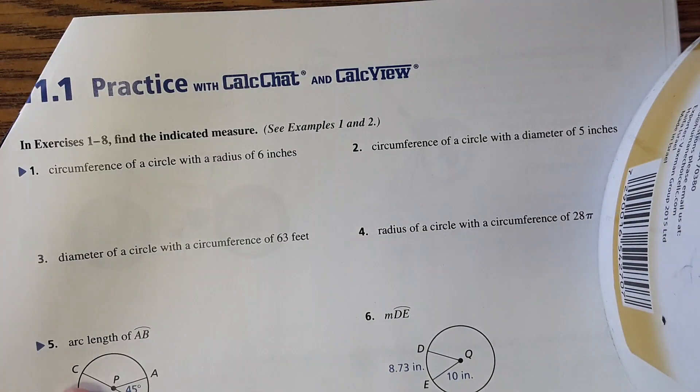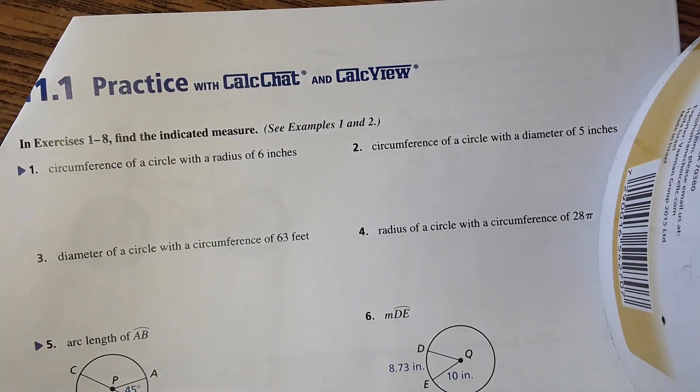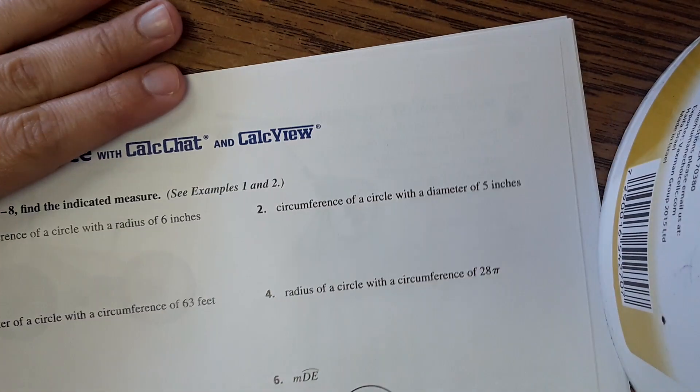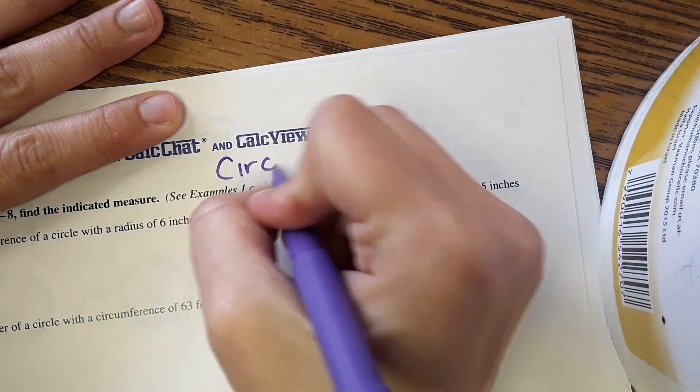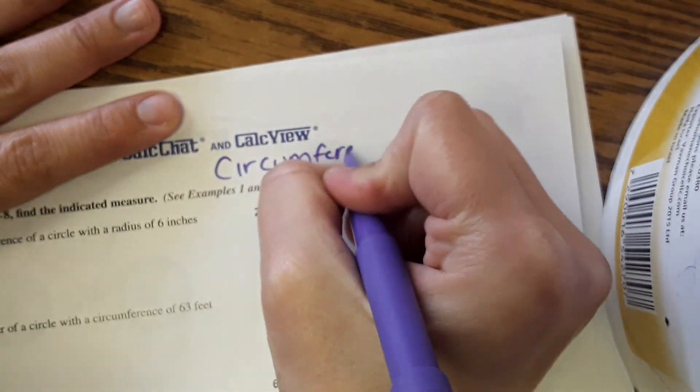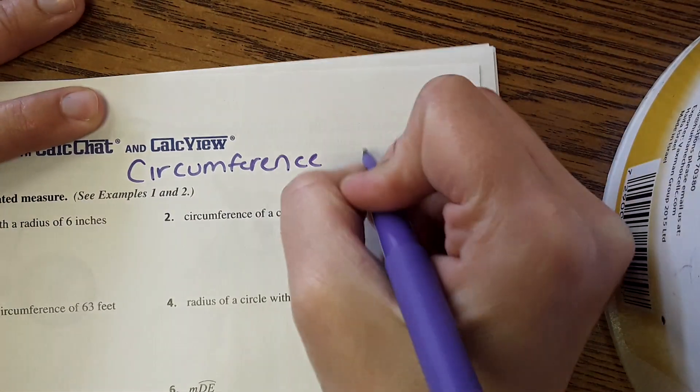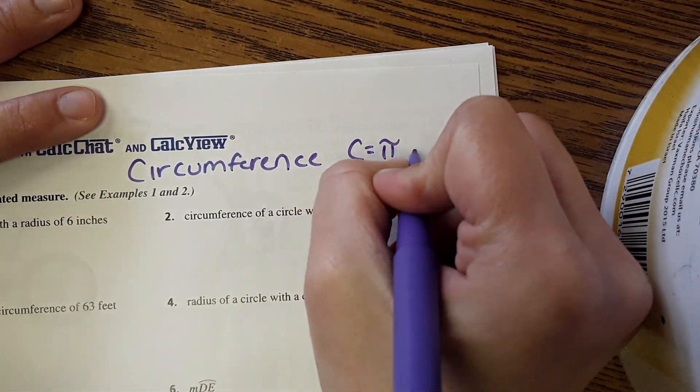So the beginning of this lesson starts out with circumference and the equation for circumference. Circumference is the distance around the circle. The equation is circumference equals pi times diameter.